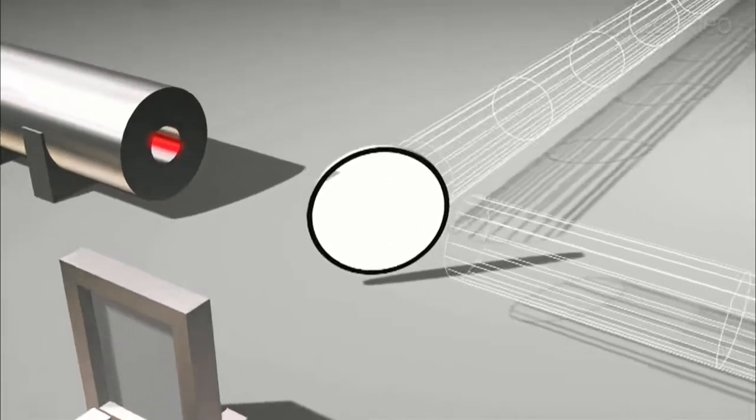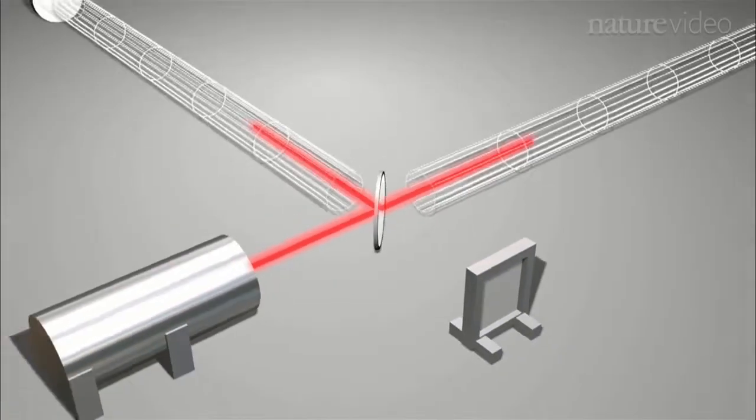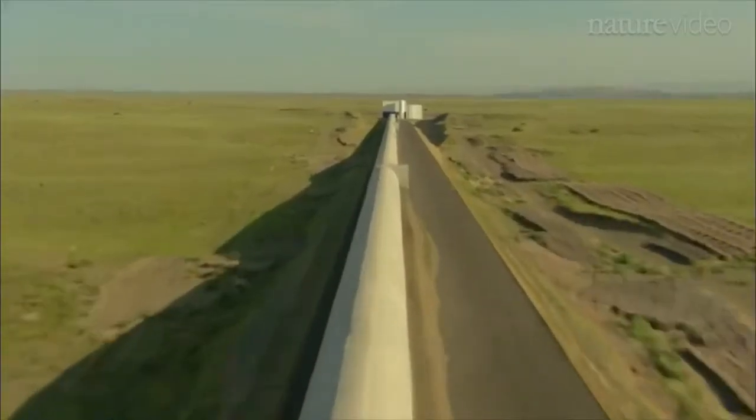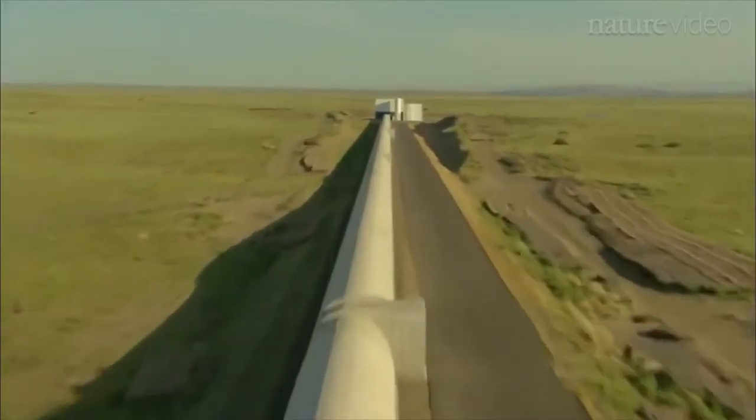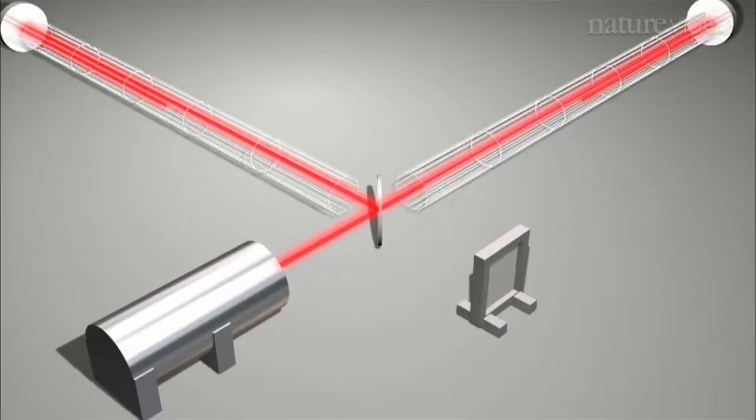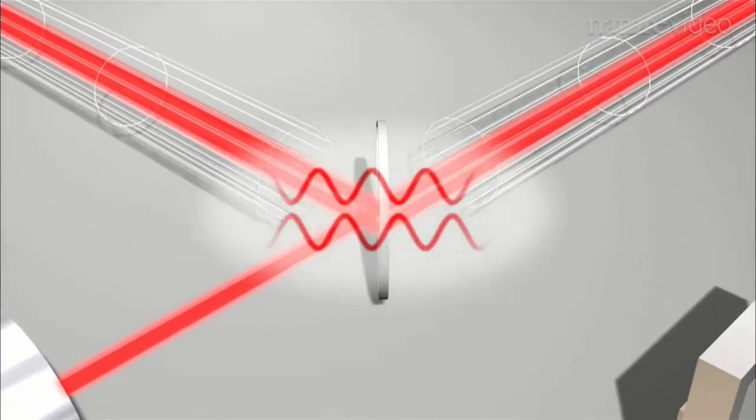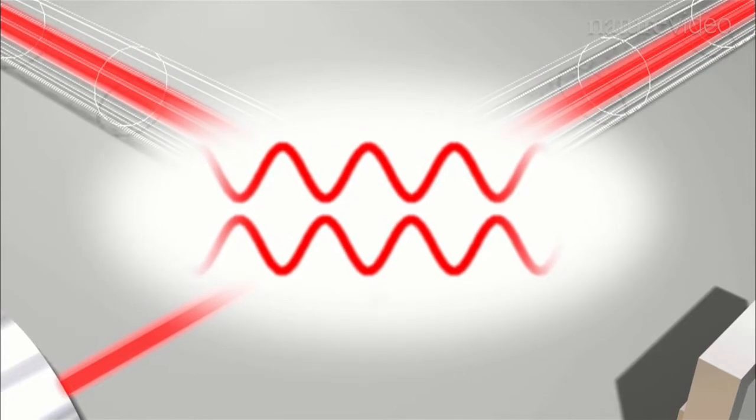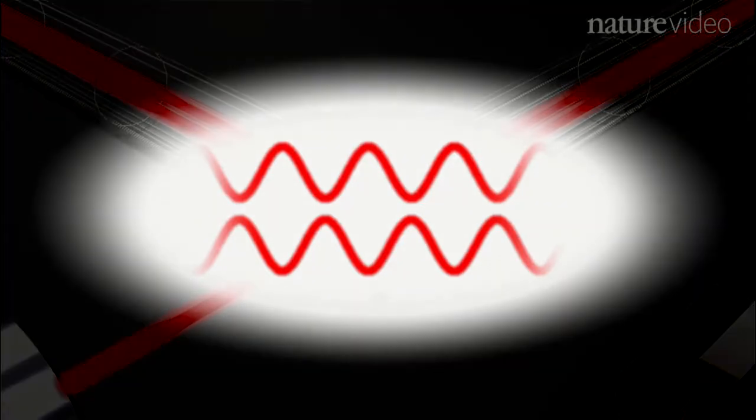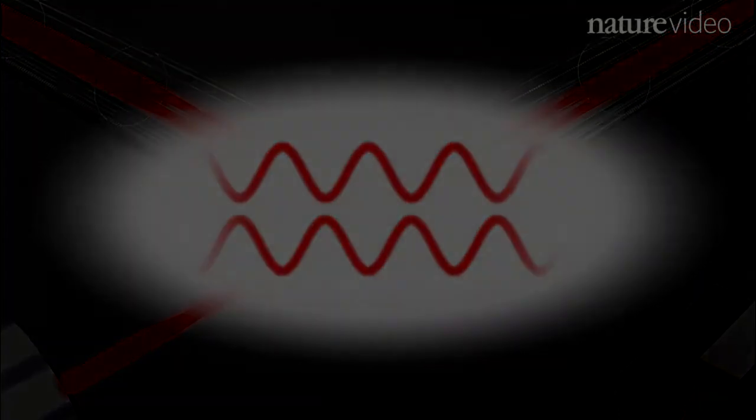LIGO works by splitting a laser beam and sending it in two directions. The beams travel precisely the same distance down long vacuum tubes. They're reflected off mirrors, and then they come back and recombine. The light waves of each laser beam are made to exactly line up so that they cancel each other out and nothing will reach the light detector at the end.